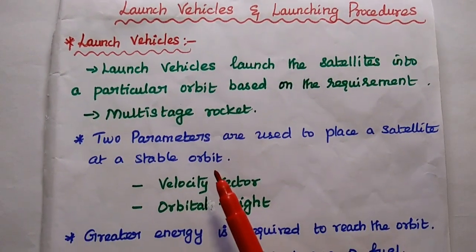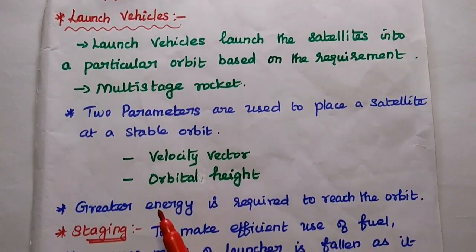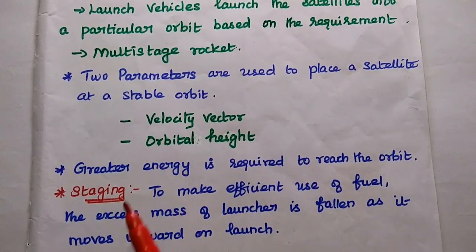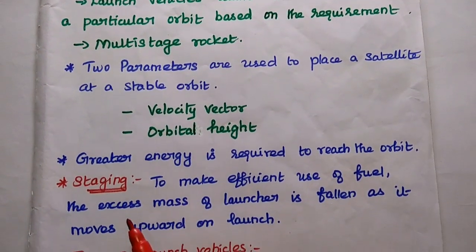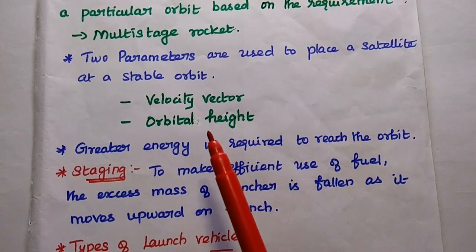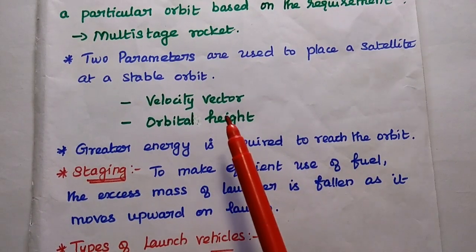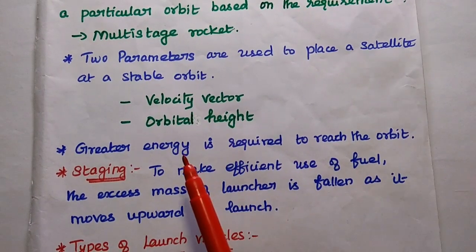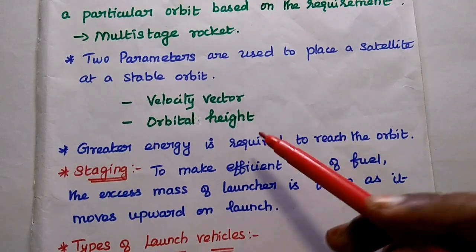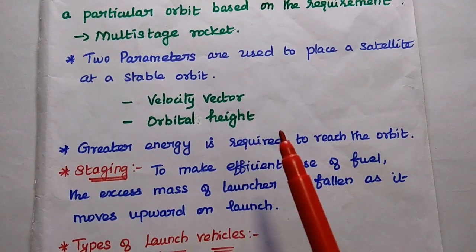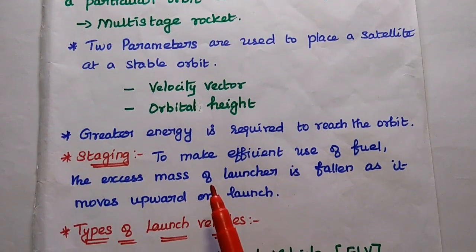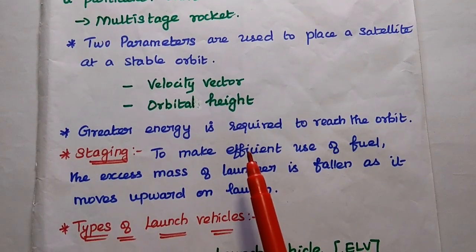Launch vehicles are also called as multi-stage rockets. There are two important parameters used to place a satellite at a stable orbit: one is the velocity vector, and the next one is orbital height. These two parameters are very important to place the satellite at a particular orbit in a stable condition.